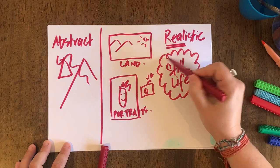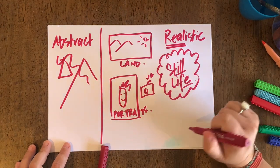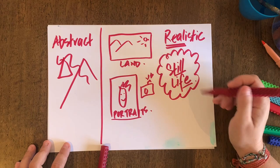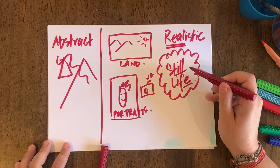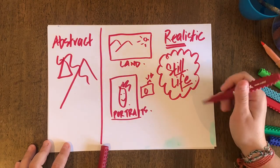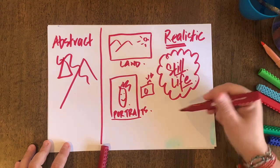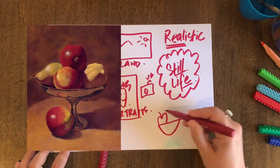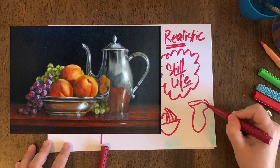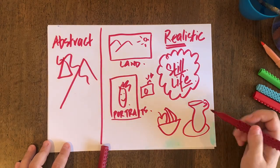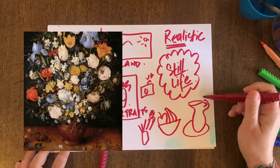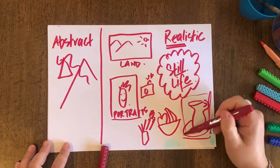Now, have a think about that. What do you think still life could mean? Well, essentially, a still life is an artwork created of anything that can't move on its own. So a person, they can move on their own. A dog can move on their own. But a fruit bowl — well, that can't really move on its own, can it? Or a jug of water, that can't move on its own either.